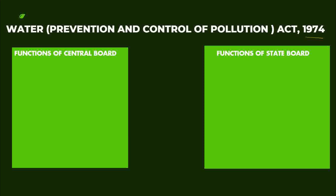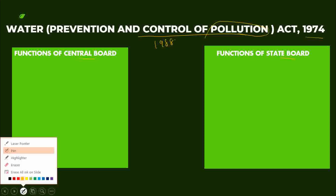Next, the Water Act of 1974, mainly for the prevention and control of water pollution. It was amended in the year 1988. Under this act, two boards are formed: one is the Central Board and another is the State Board.